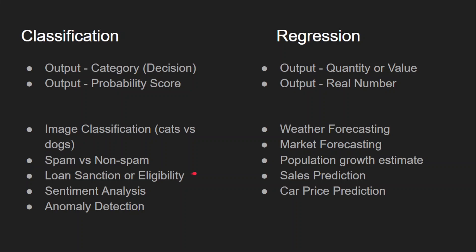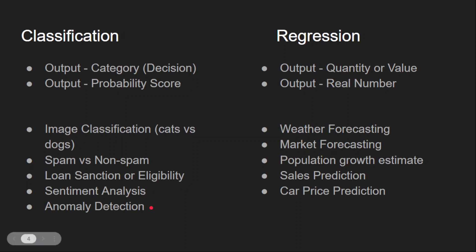You can also use tabular data — one example is loan sanction or eligibility, where we have a table of all the applicant details and need to decide whether the loan can be sanctioned. There is also Twitter data, where you can analyze the sentiment of a particular tweet — whether it indicates a positive or negative sentiment. You can even use sensory data from industries to detect anomalies in the working of machines. All of these come under classification problems.